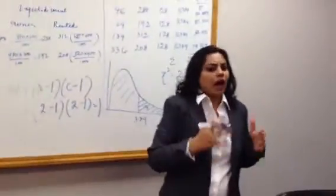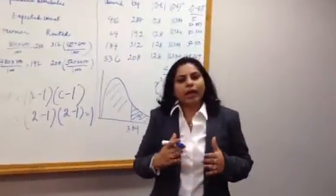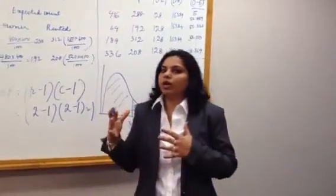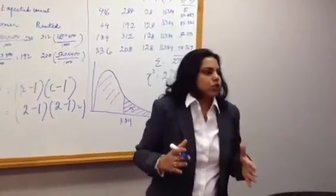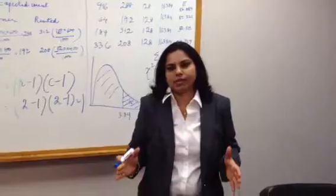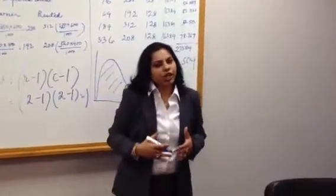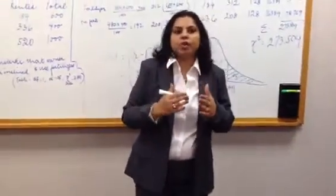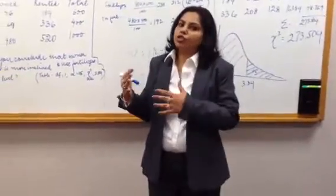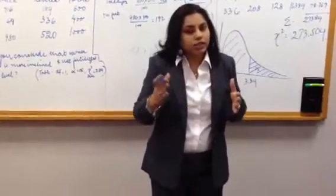We can also prove that chi-squared critical, whenever that value is less than chi-squared calculated, we always reject null hypothesis. When we reject null hypothesis, it means that ownership of the land and the use of fertilizers are not independent attributes.